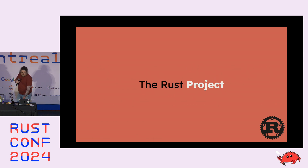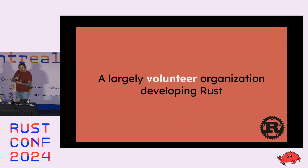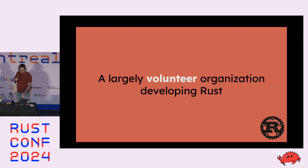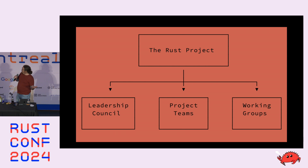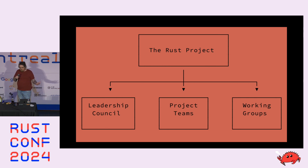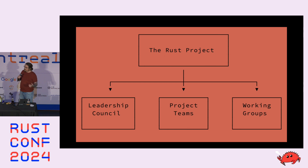The Rust project, unlike the Rust Foundation, is a largely volunteer organization developing Rust — the open source community, the people you've met at conferences like this. It's made up of three major groups: the Leadership Council, which Jack and I are part of, which is the main governance organization within the project; the project teams, which are responsible for many things I'll get into; and a bunch of other organizations like working groups handling different aspects of the ecosystem and community.